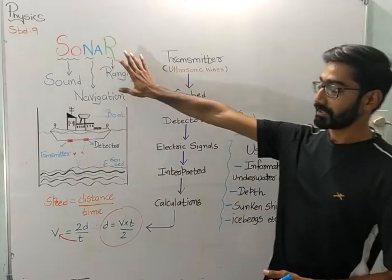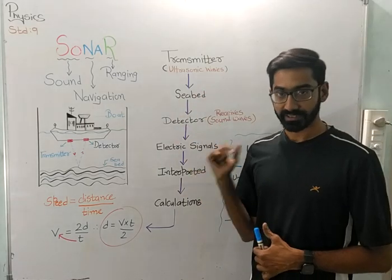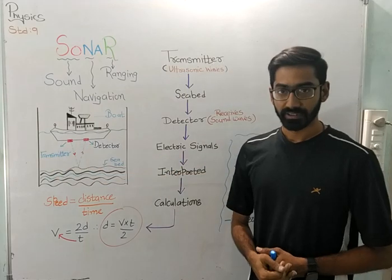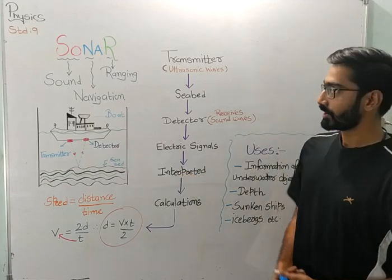Starting, SONAR consists of two main devices. One is transmitter and another is detector, which you can again see in the figure. These two red dots symbolize one is transmitter, other is detector.